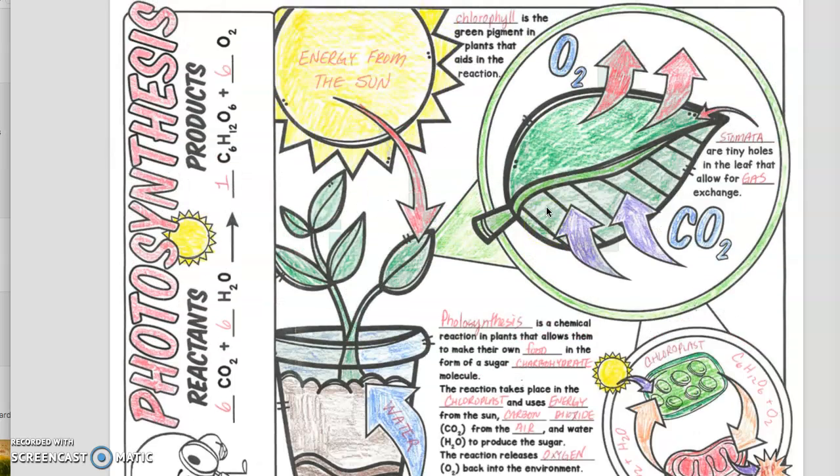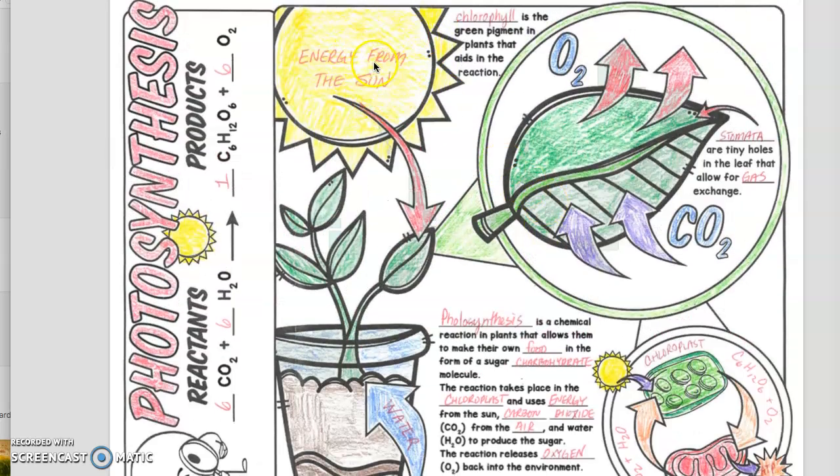So a little rundown here. We have energy from the sun goes into the plant. It's absorbed by the chloroplast. The plant itself absorbs water through its roots and it also absorbs carbon dioxide through its leaves. How does it do that?